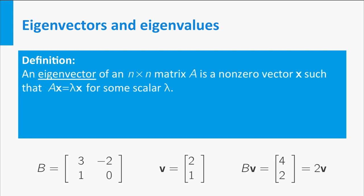An eigenvector of an n by n matrix A is a non-zero vector x such that A times x equals lambda times x for some scalar lambda. So the vector V is an eigenvector of the matrix B from the example, because B times V equals 2 times V.